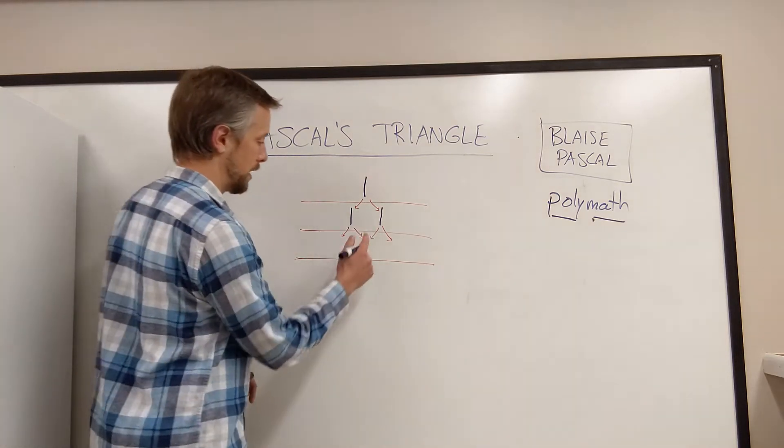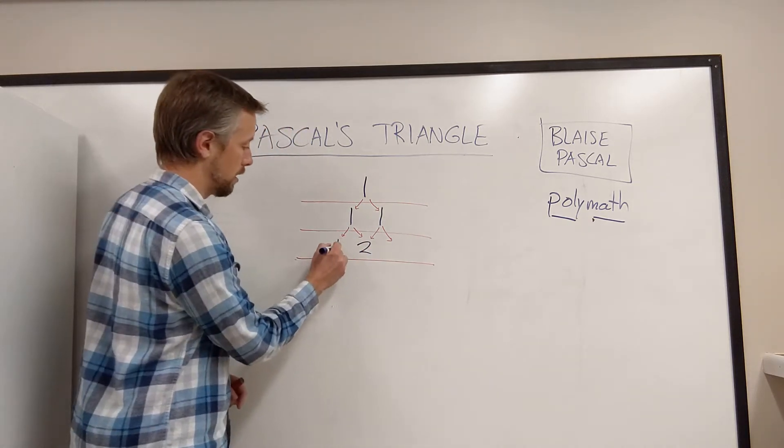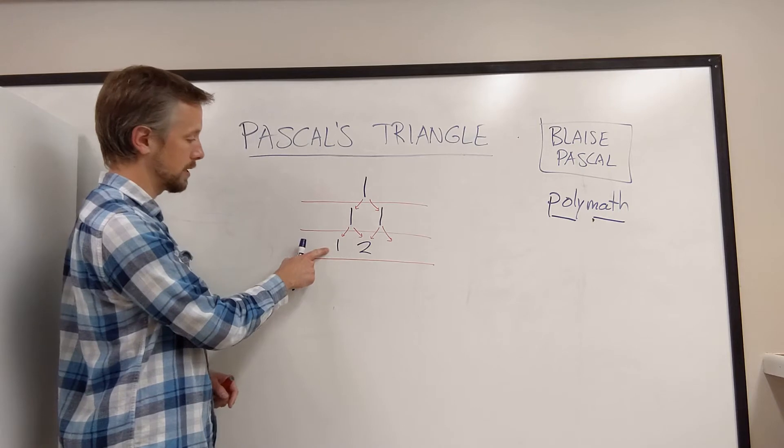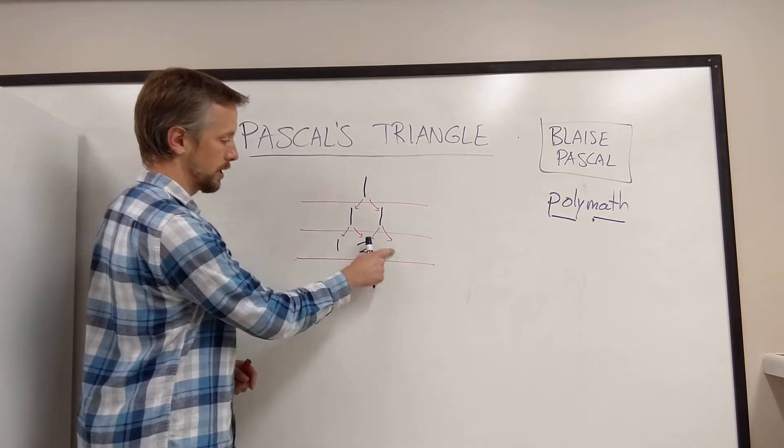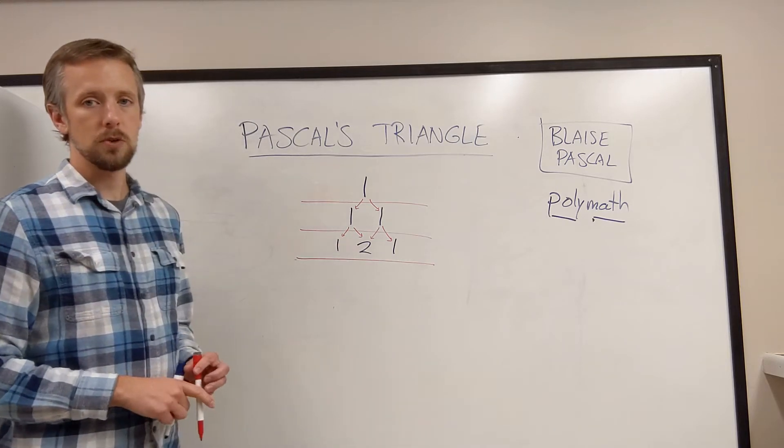So in this case, we have 1 plus 1, which is 2. Here, we have 1, because only this 1 gets brought down here. That's it. This 1 gets brought down here, and that's it there. And that's the third row of Pascal's Triangle.